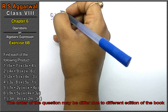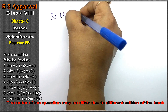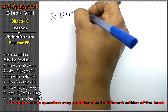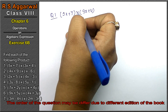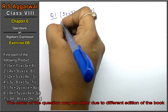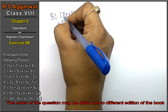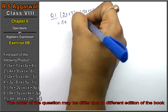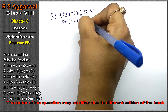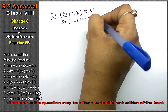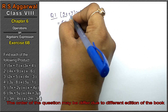Question number one: find each of the following products. First question: (5x + 7) multiplied by (3x + 4). When two things are given in a bracket with a multiply sign, first we take this expression and multiply it from the bracket (3x + 4), then take the next number and multiply it from the whole bracket.